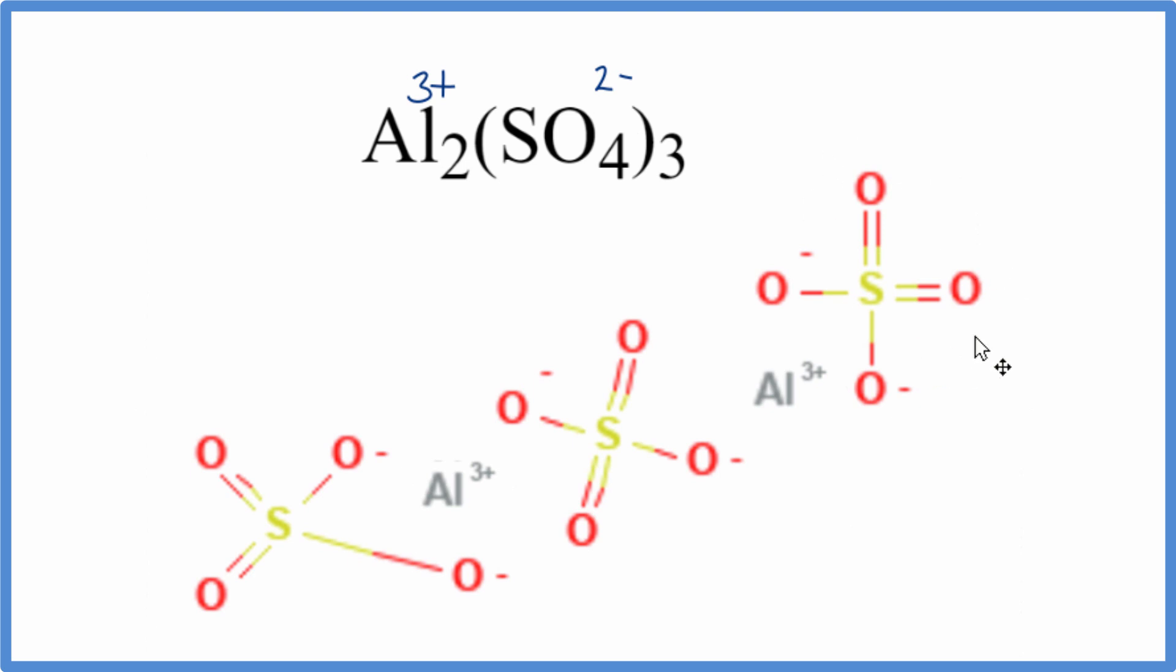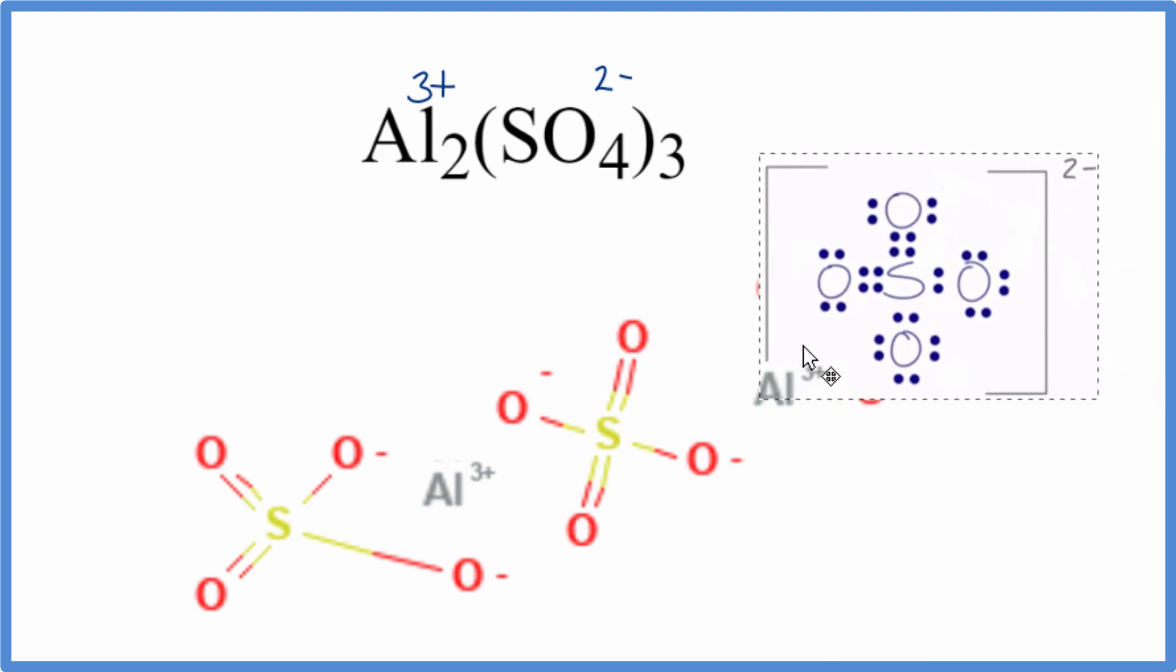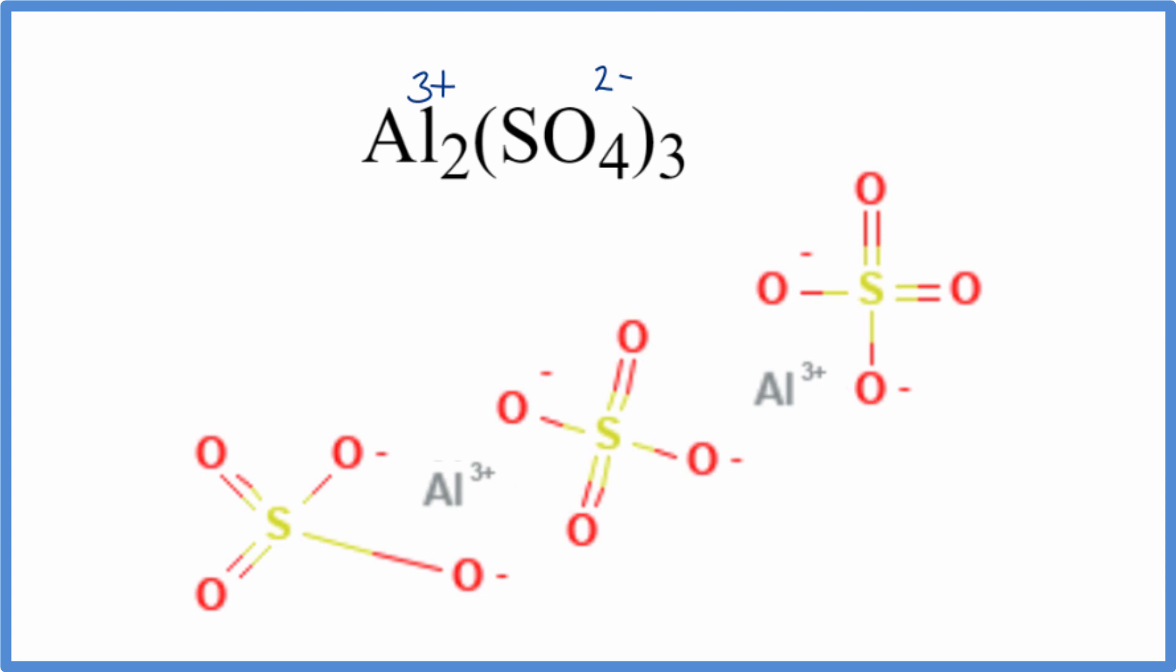Often you'll see these sulfate groups with brackets around them and then the 2- charge out here. In this case, they put the minus charge on the oxygen with the single bond. These are the formal charges, and they do add up to the charge on the whole ion. You might see it with brackets with the Lewis structure and the negative charge there. This works as well.